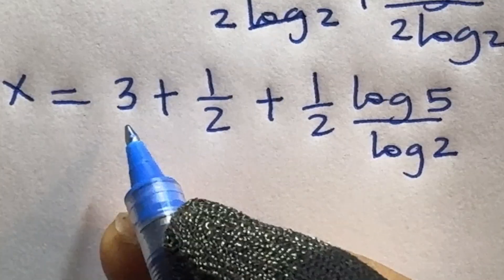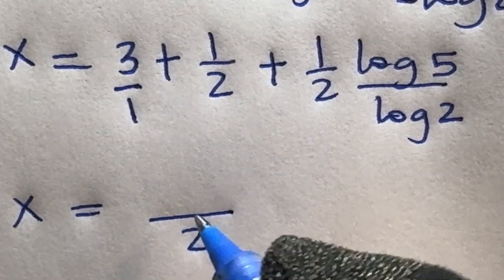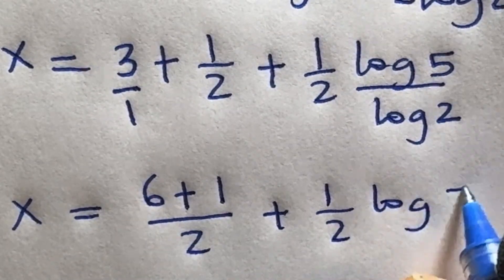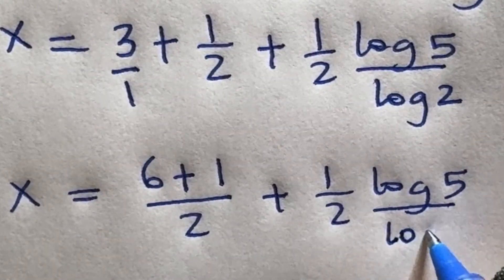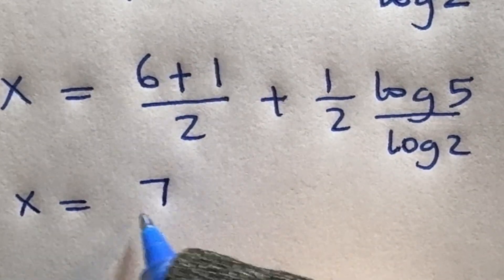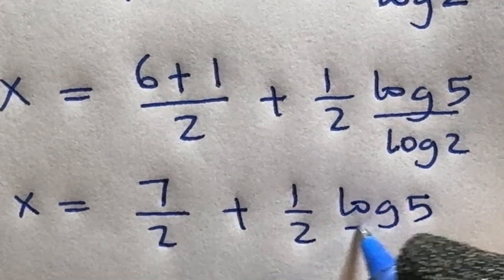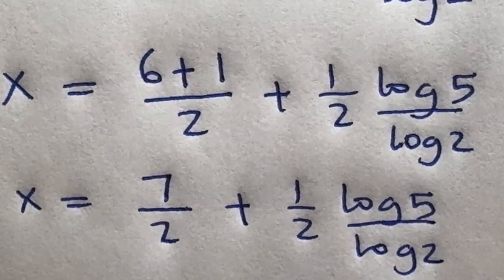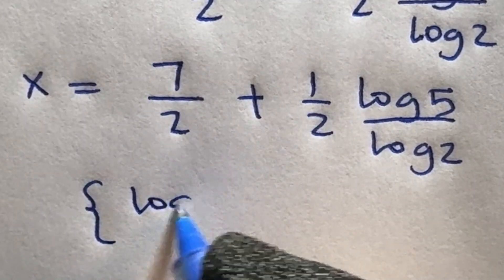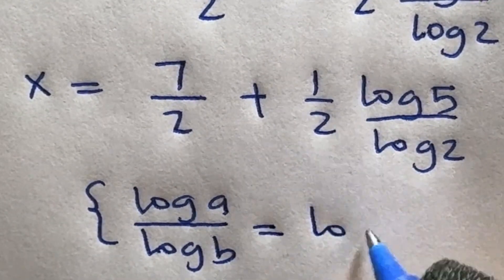Taking the LCM of 3 plus 1 over 2, which is 2, this gives us 6 plus 1 over 2, plus 1 over 2 times log 5 divided by log 2. Now log 5 divided by log 2 is of the form log a divided by log b, which equals log a base b.